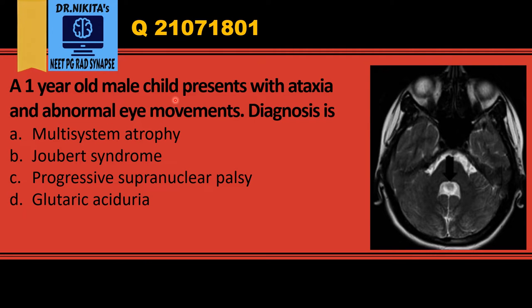A one-year-old male child presents with ataxia and abnormal eye movements. Looking at the clinical scenario, the age itself rules out multi-system atrophy and progressive supranuclear palsy, which are seen in adults. So it's either Joubert syndrome or glutaric aciduria. The history of ataxia and abnormal eye movements suggests a cerebellar problem, and Joubert syndrome affects the cerebellum — so the answer is cerebellum. We can answer this even without looking at the image.